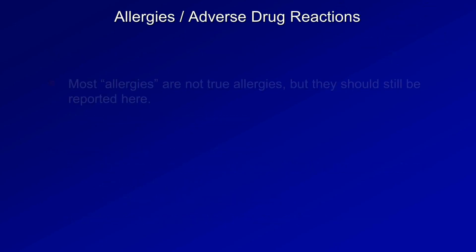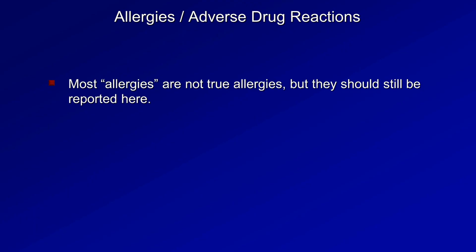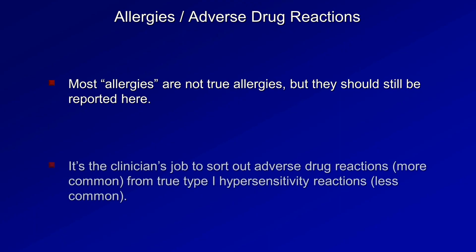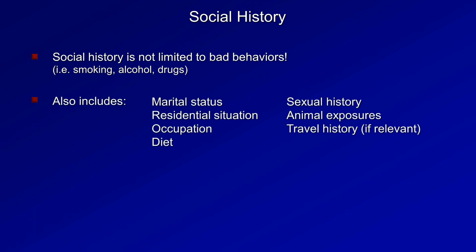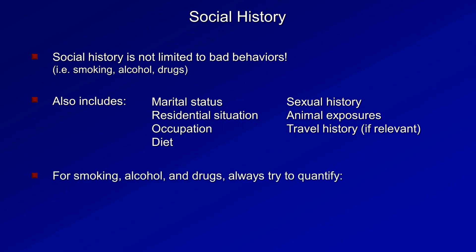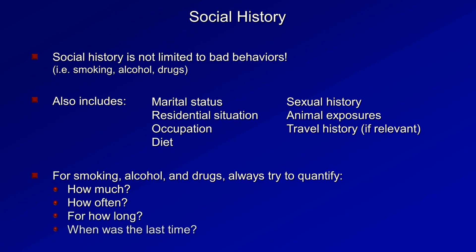For allergies and adverse drug reactions, realize that most things patients call allergies aren't true allergies, but they should still be reported. It's the clinician's job to sort out adverse drug reactions, which are more common, from true type 1 hypersensitivity reactions, which are less common. The social history is next — it's not just limited to bad behaviors. It also includes marital status, residential situation, occupation, diet, sexual history, animal exposures, and travel history if relevant. For smoking, alcohol, and drugs, always try to quantify how much, how often, for how long, and when the last use was.